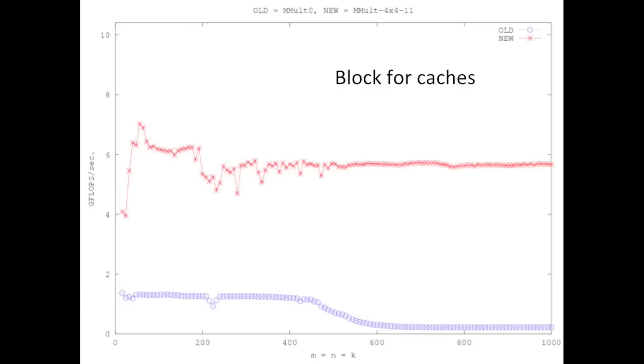Now the code for doing this is on the wiki page. What is the performance benefit? Well, notice that now we maintain the very good performance that we got when the data still resided in the L2 cache. Now you may ask yourself, is this the best we can do?